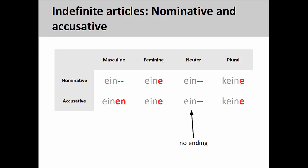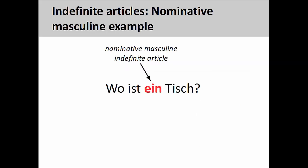Let's take a look at a few sentences to explain this a bit more. In the sentence you see here, 'Wo ist ein Tisch?' — Where is a table? — it is difficult to know whether the noun is masculine or neuter, since ein does not take an ending.